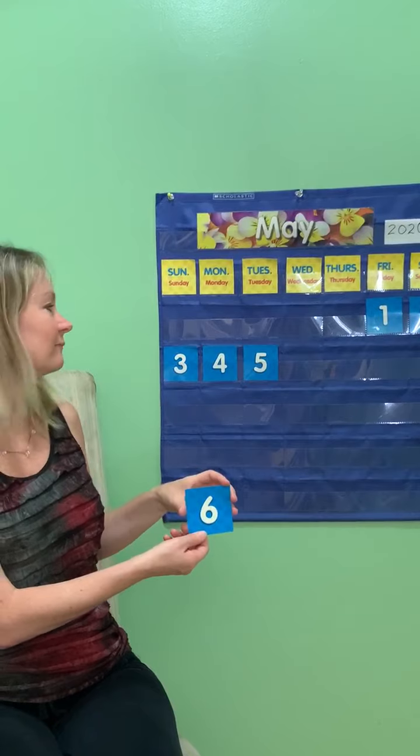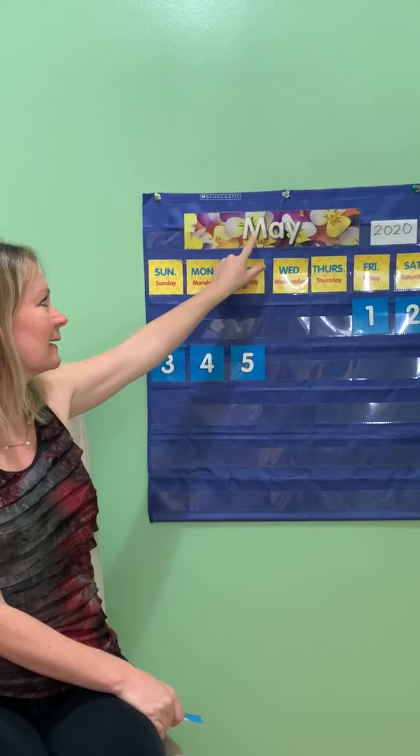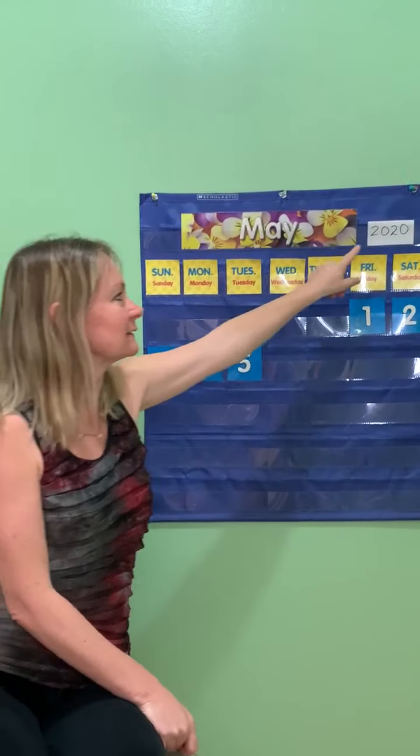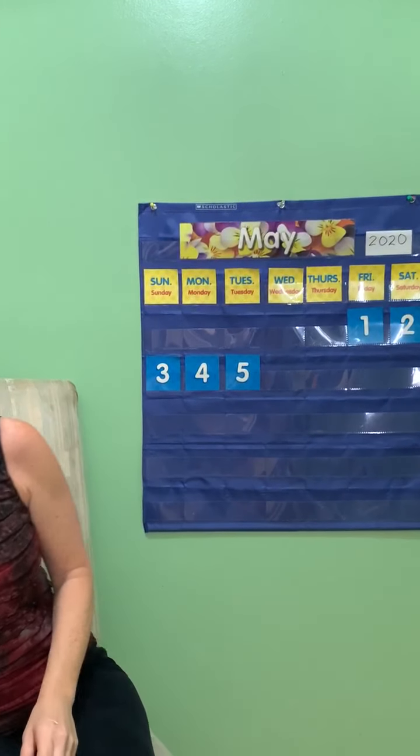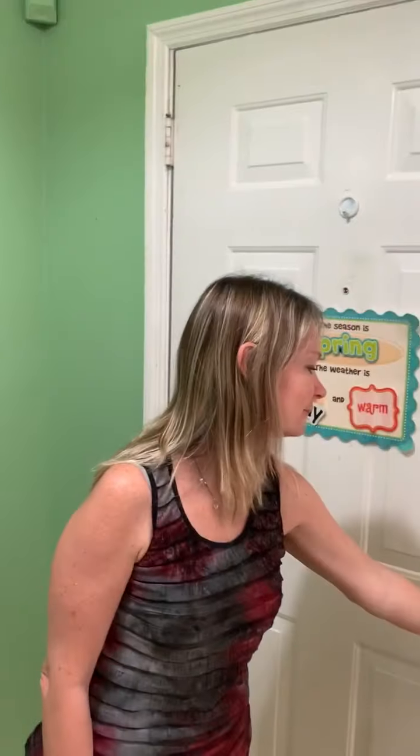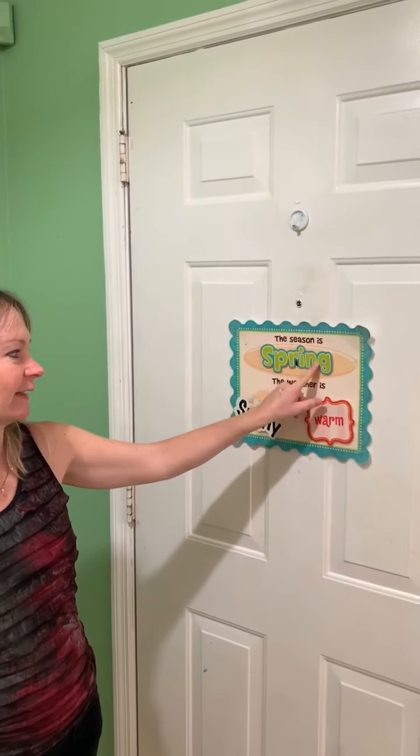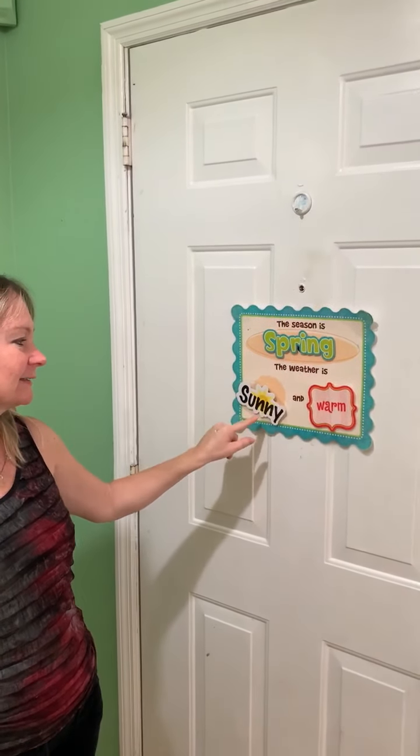That comes after five. So today is Tuesday, May 6, 2020. Let's look outside and see what our weather is doing. It is a perfect morning here in Palm Bay. Our season is spring. Our weather is sunny and the temperature is warm, just like yesterday.